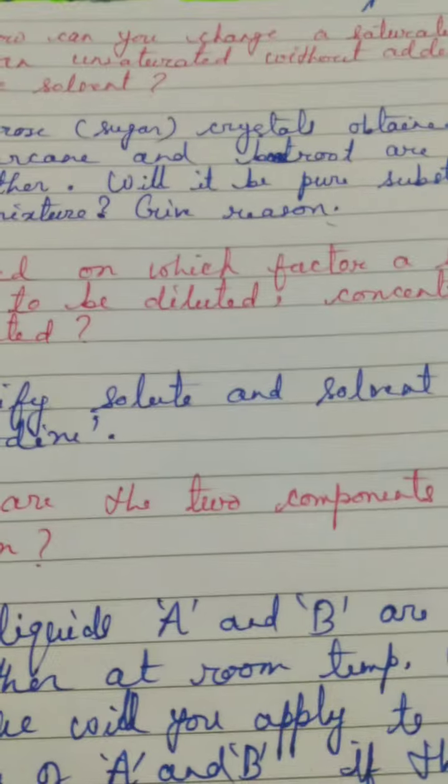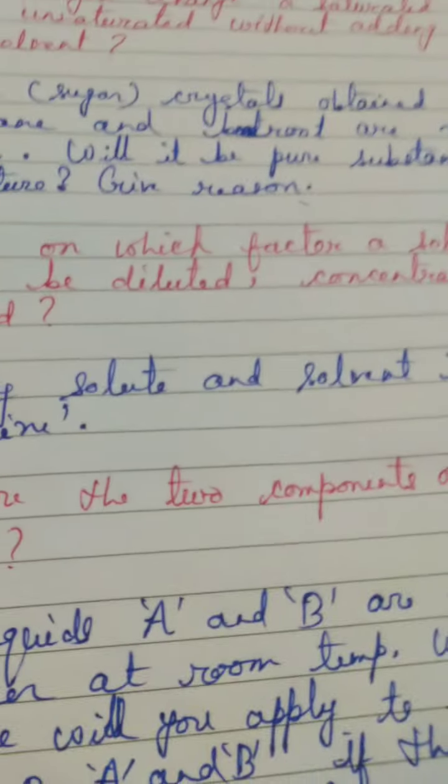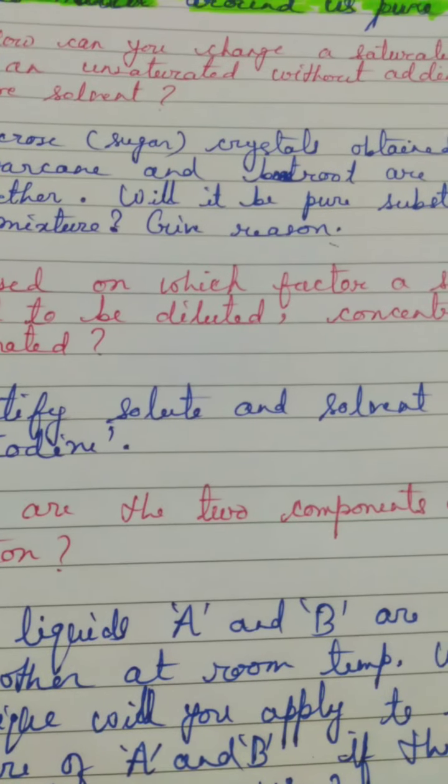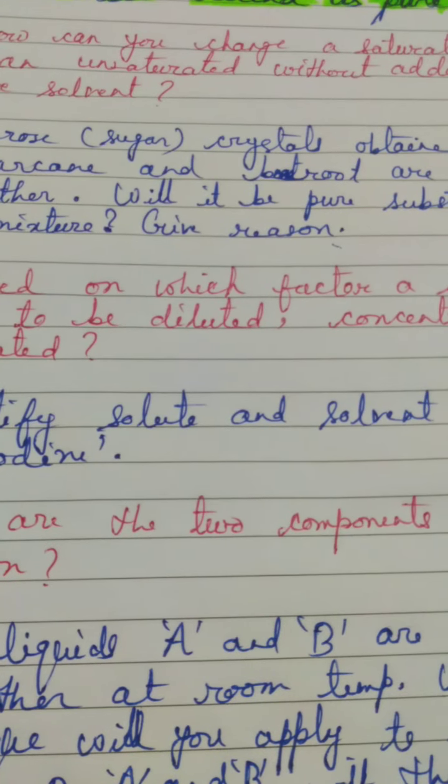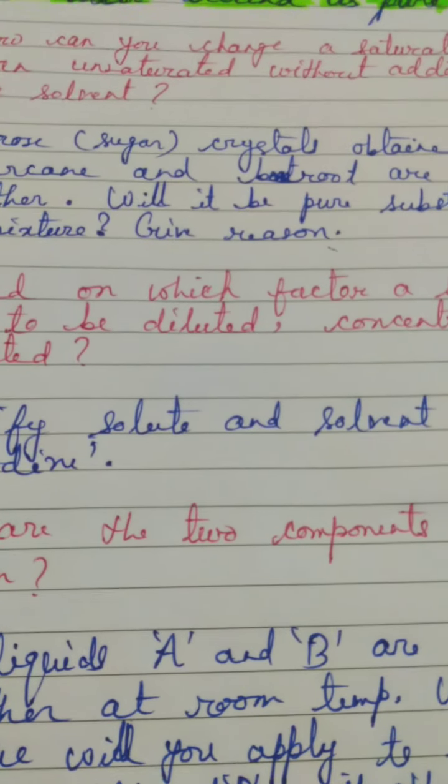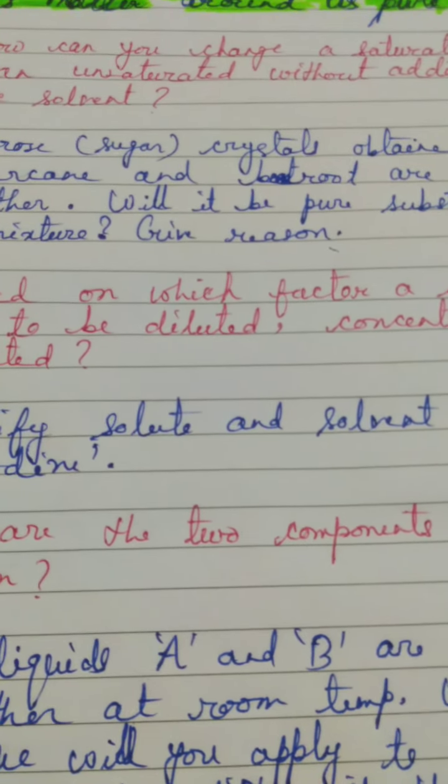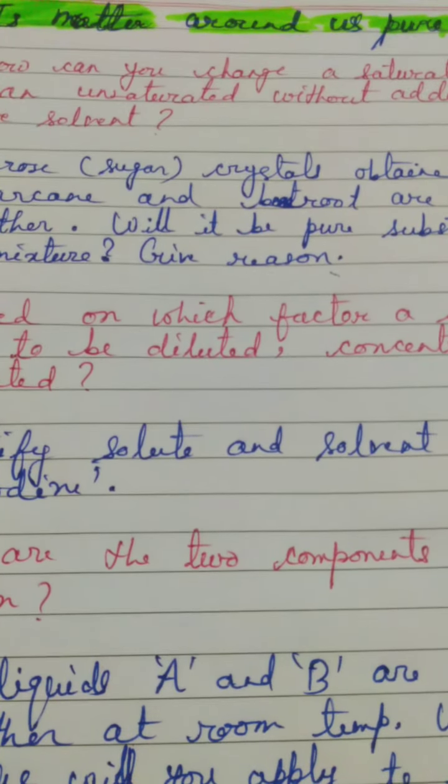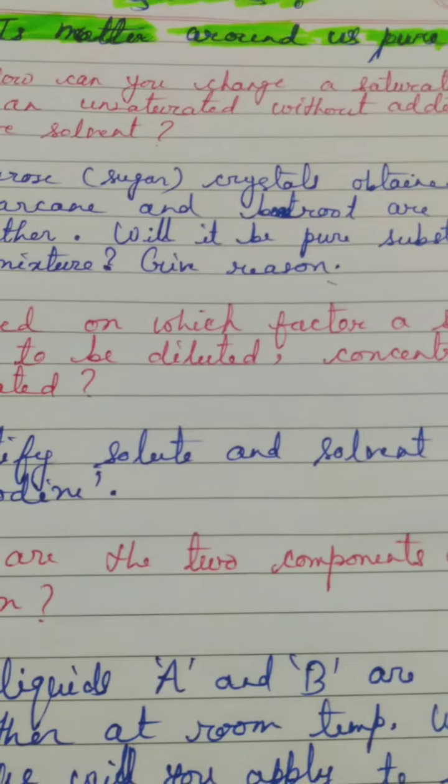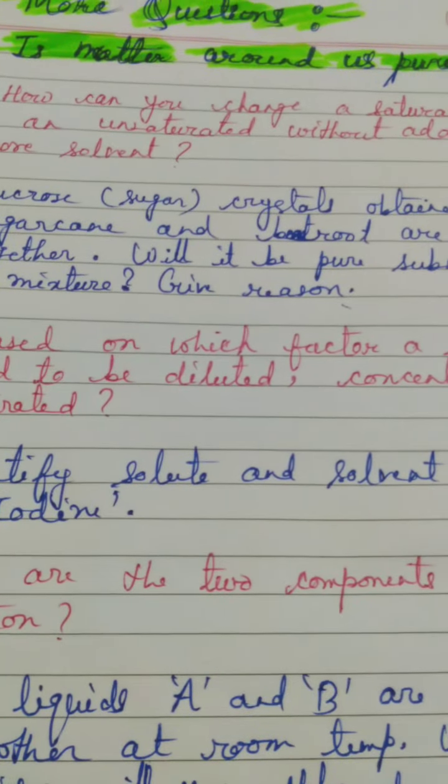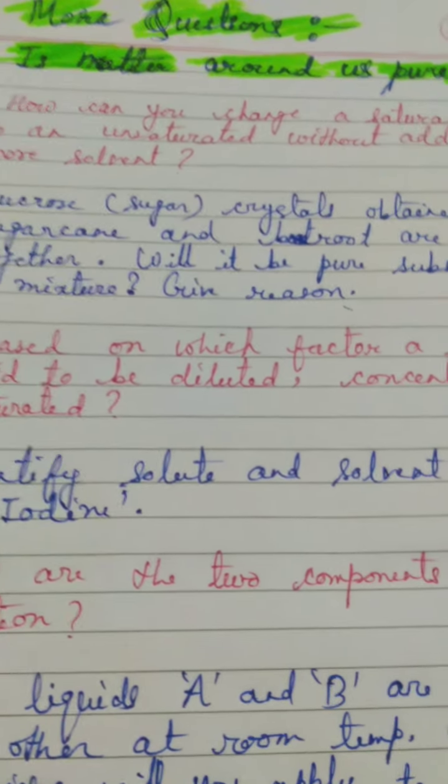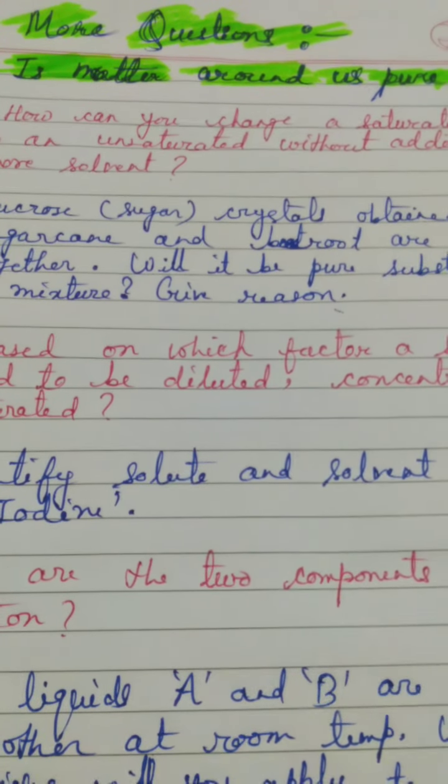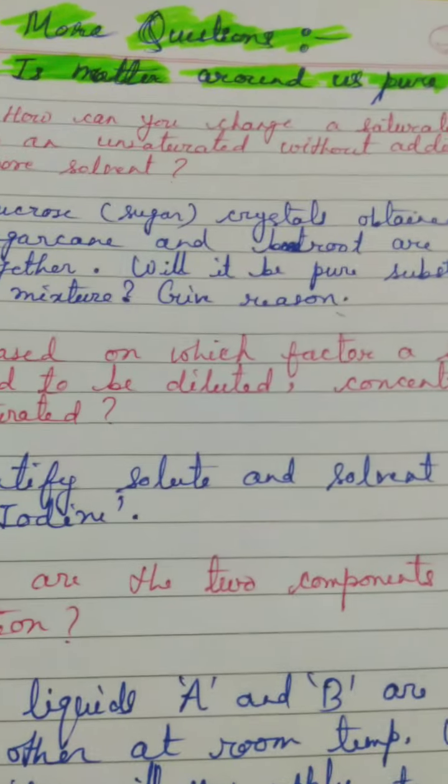Now, question number 2: Based on which factor a solution is said to be diluted, concentrated or saturated? You have to just try to find out that how much solute has been dissolved in the fixed amount of solvent. If you have taken 200 gram of solvent, then what amount of solute you have added in the 200 gram of solvent. Then if it is less then it will be diluted, if it is more then it will be your concentrated.